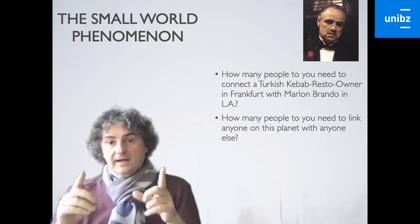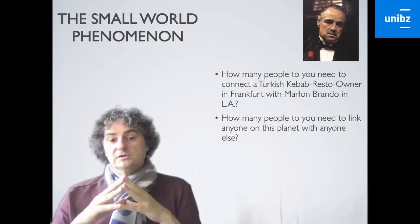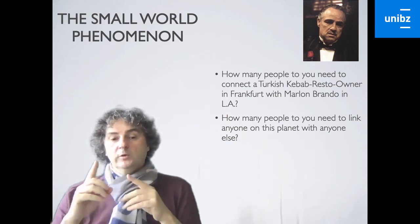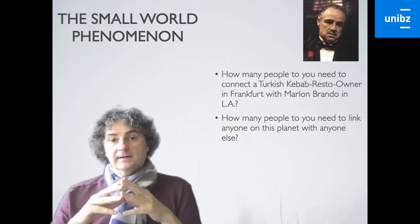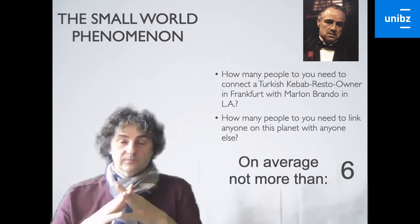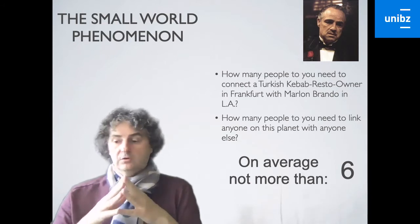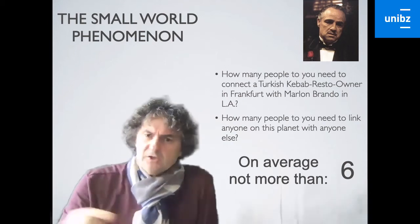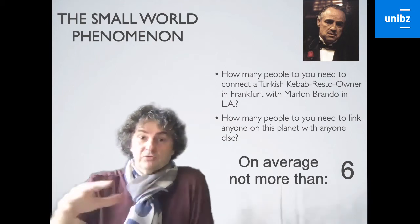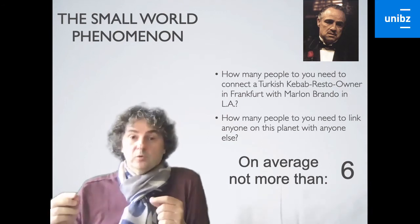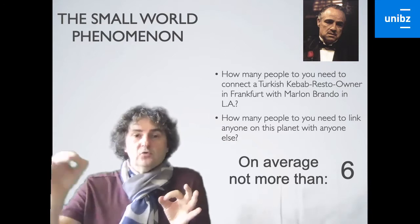So how many intermediate relationships do we need to relate any person on this planet with anyone else on this planet? And the answer to that question is, on average, we do not need more than six people. And here we talk about the six degrees of separation. And I would say, well, how does this work? I mean, that's not so much. We have billions of people living on this planet. So how do you connect everyone with everyone with just a few interlinkages?